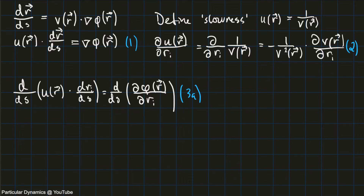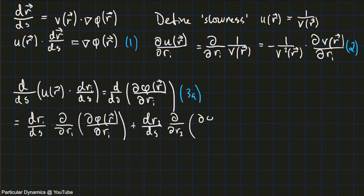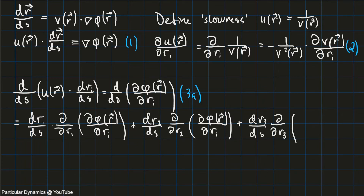Now I'm going to focus on the right-hand side. I'll use the chain rule and introduce three new intermediate variables r1, r2, and r3. So we change from d/ds into dr1/ds, and we introduce the partial derivative with respect to r1, and here we get the same expression that we had in the parentheses. We do this for all three dimensions: dr2/ds with the term in the parentheses with respect to r2, and the last dimension, dr3/ds with respect to r3, and the term in the parentheses.